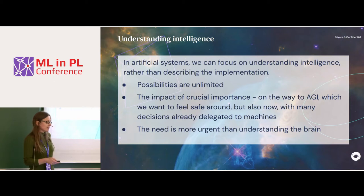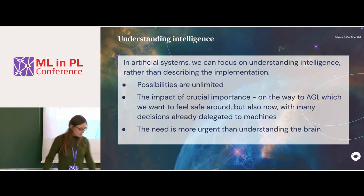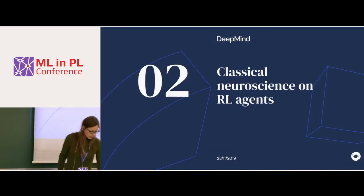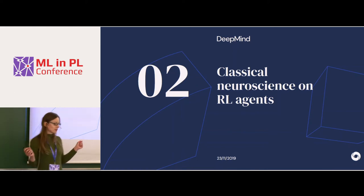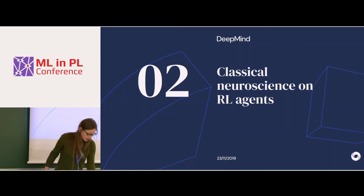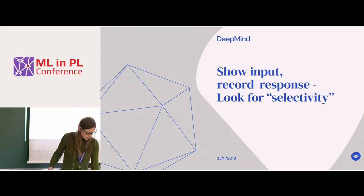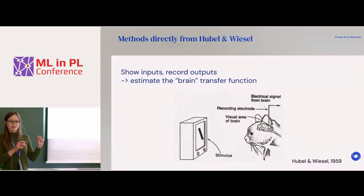I would try to convince you that this need is more urgent than understanding the real brain. Starting with stories from about five years ago, when I came with all these neuroscientific tools and joined the company at the beginning of the deep learning rush, with the deep Q-learning network still very hot in the news, starting the era of deep learning reaching AI level.